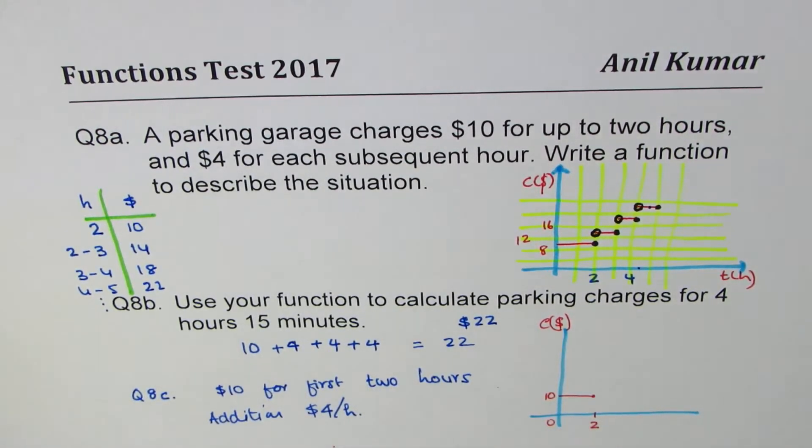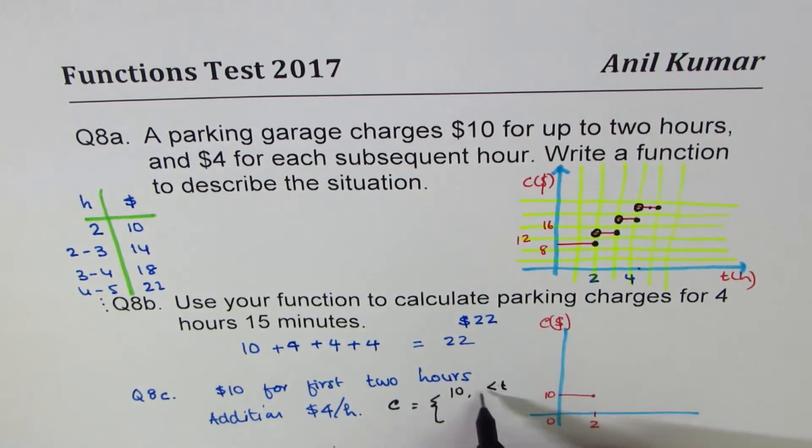So that becomes a piecewise function. Let me describe this first. So the cost will be equal to 10 for time which is greater than 0 but less than or equal to 2. However, if the time is greater than 2, then it is 10 plus time minus 2, whatever time is, times 4.